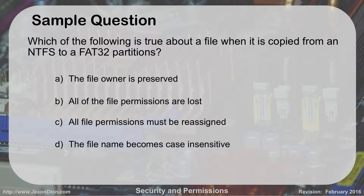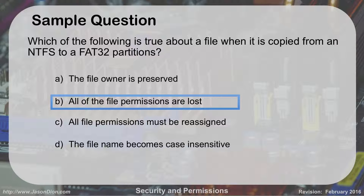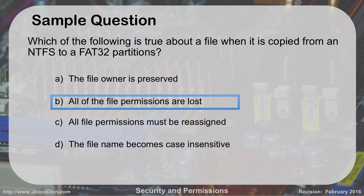Practice question: which of the following is true about a file when it's copied from an NTFS to a FAT32 partition? The answer is B — all the file permissions are lost. Because with NTFS we can have very granular file permissions, but FAT doesn't support that — it's either everyone reads it or nobody reads it. Those two permission sets are incompatible. This is really important because your hard drive is NTFS if you're running Windows 7, but thumb drives are usually formatted as FAT for compatibility between operating systems. So if you copy a file to that thumb drive, you just lost all your permissions on it, which means it's now full read-write.